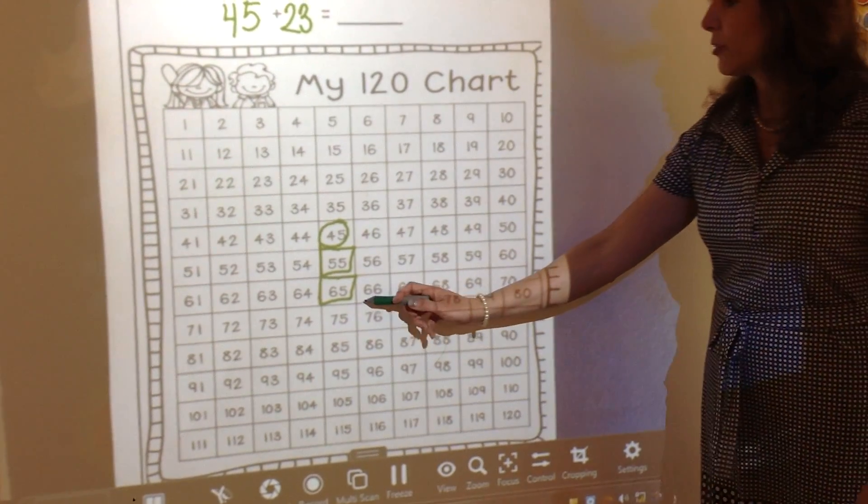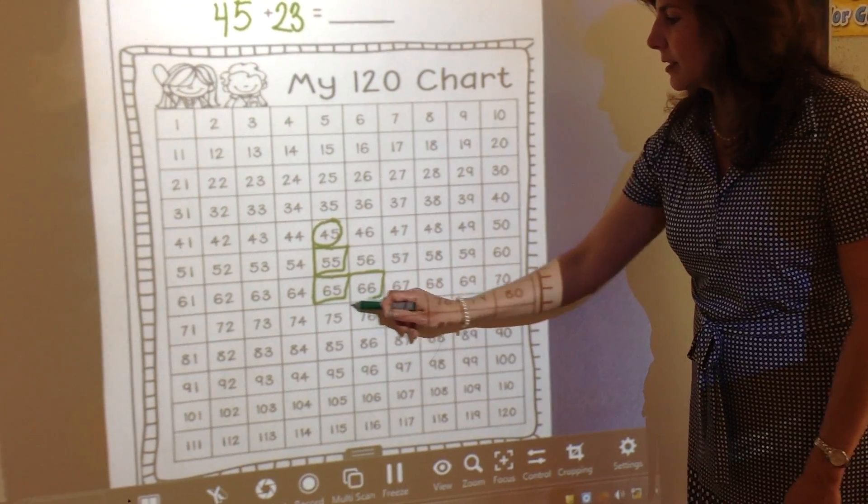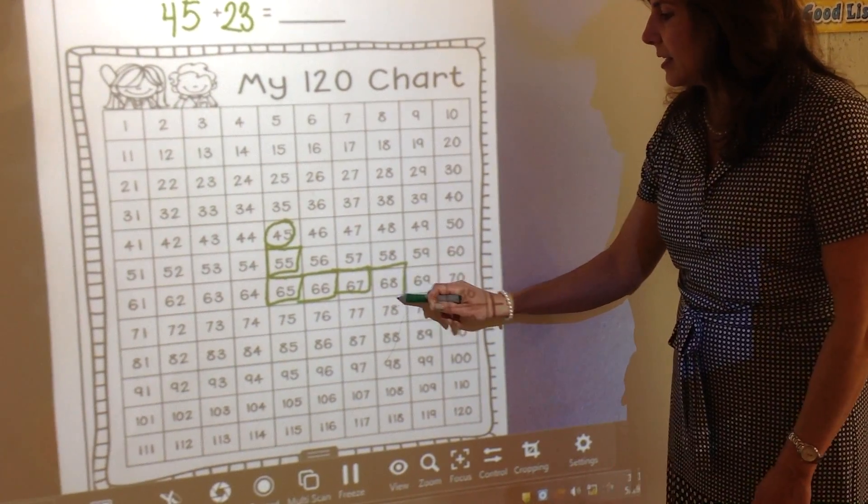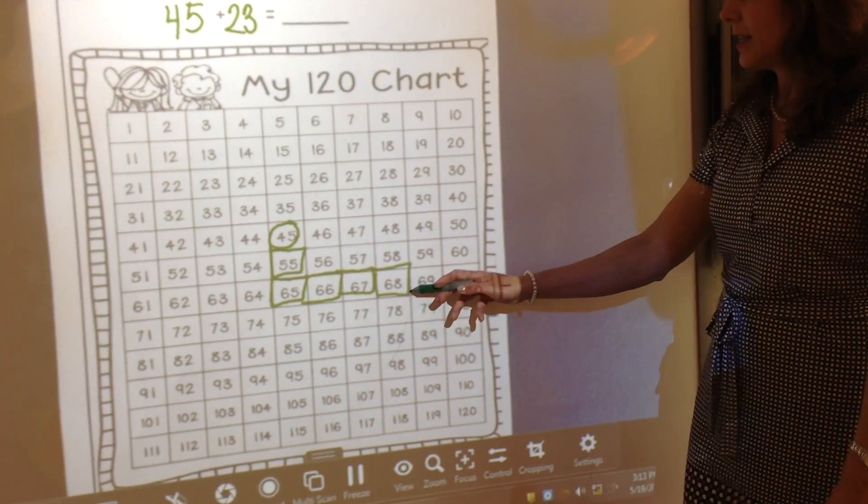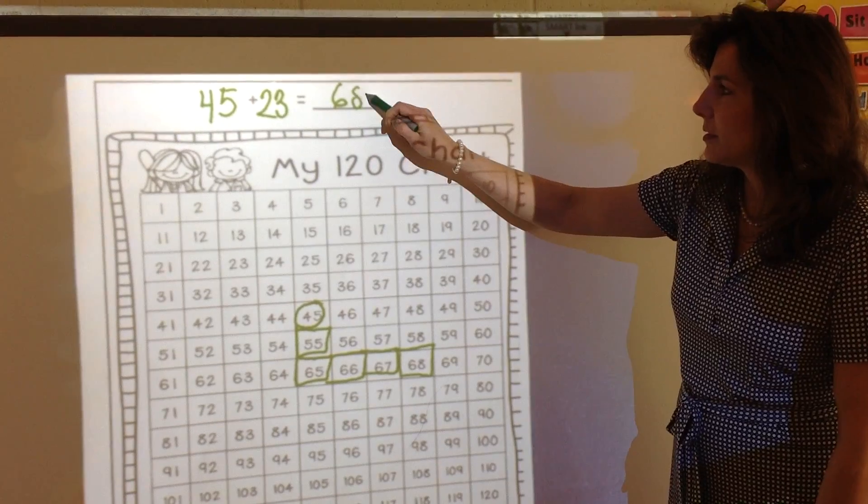Now we're adding 3 ones by moving across the row: 66, 67, 68. And it's easy to see that 45 plus 23 equals 68.